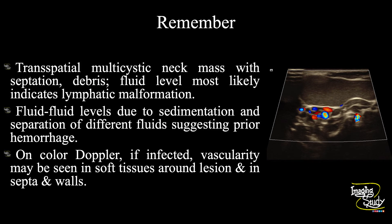Now the take-home message: if you see a multicystic neck mass with septation and debris with fluid level, it most likely indicates a lymphatic malformation. Internal fluid-fluid levels due to sedimentation and separation of different fluids may suggest prior hemorrhage. And if you see vascularity on color Doppler in the soft tissue around the lesion and in the septa and walls, it indicates an ongoing infective process.